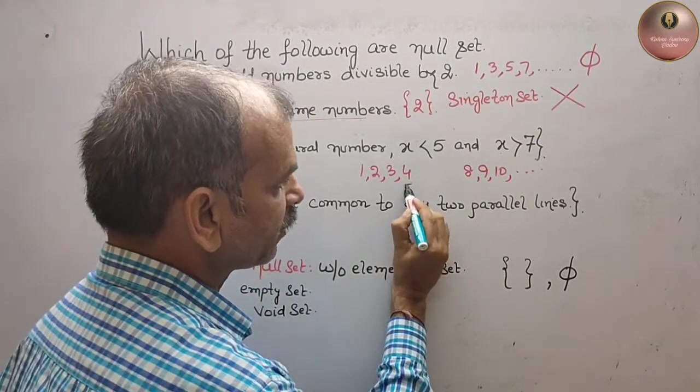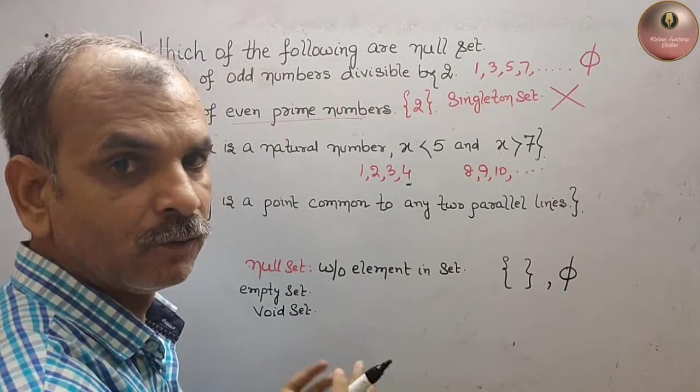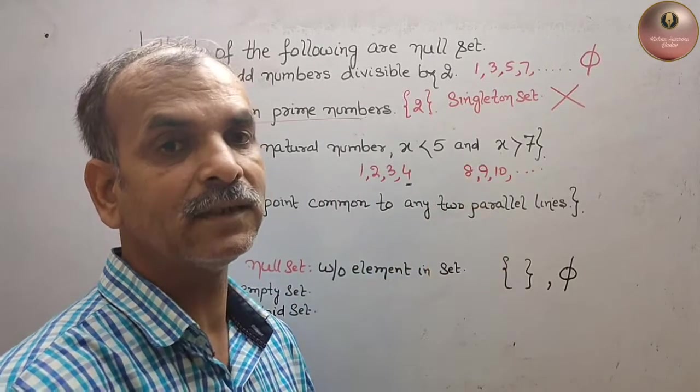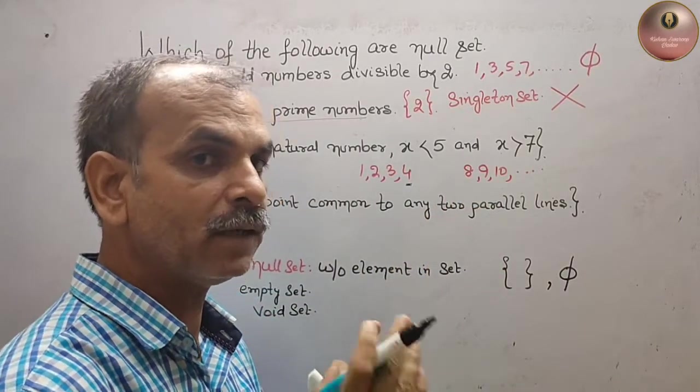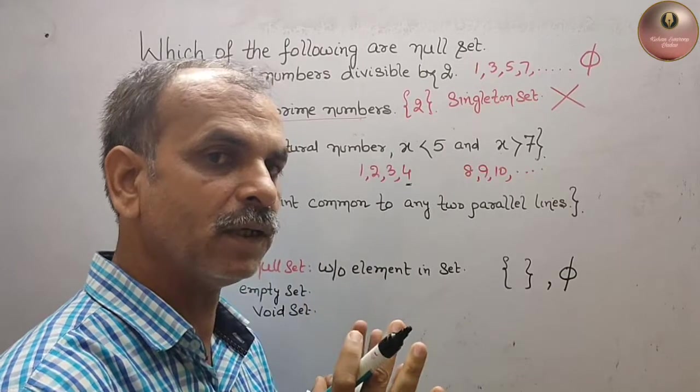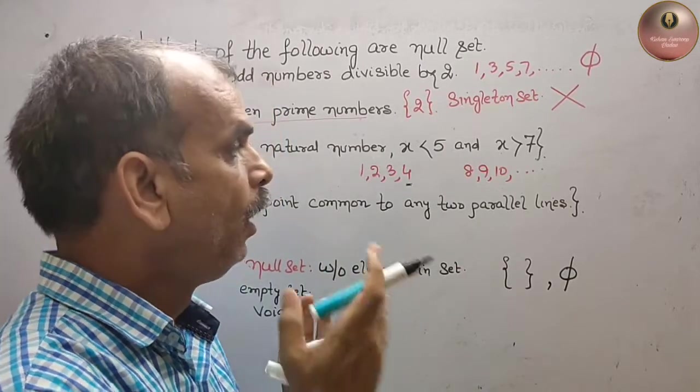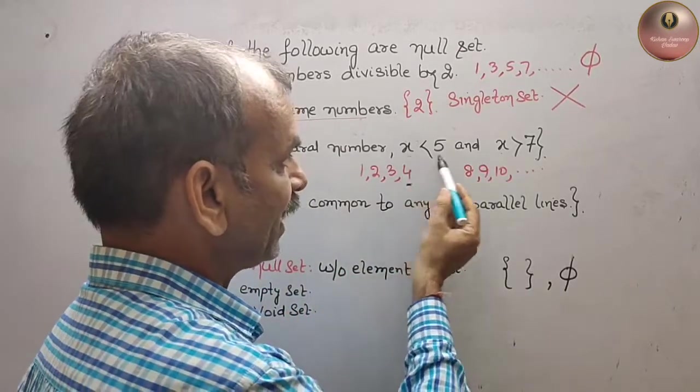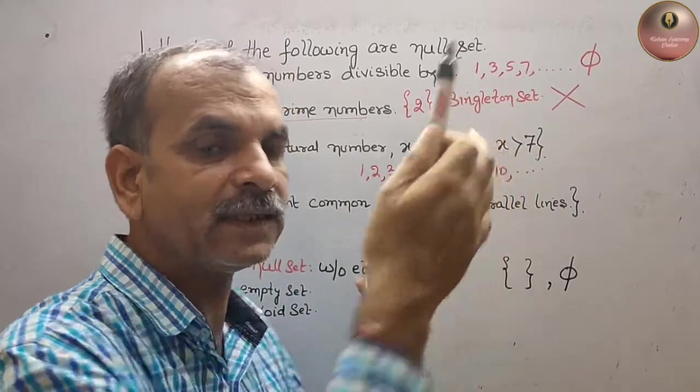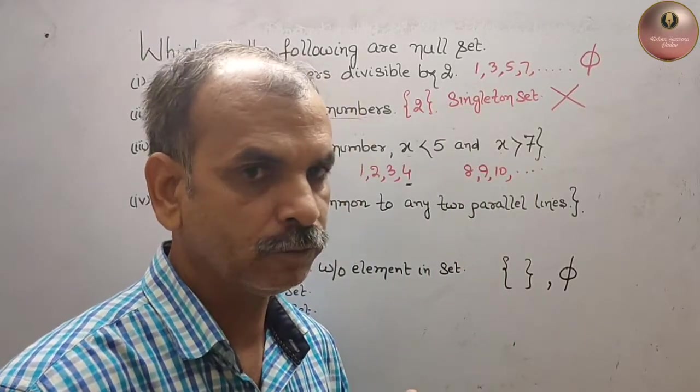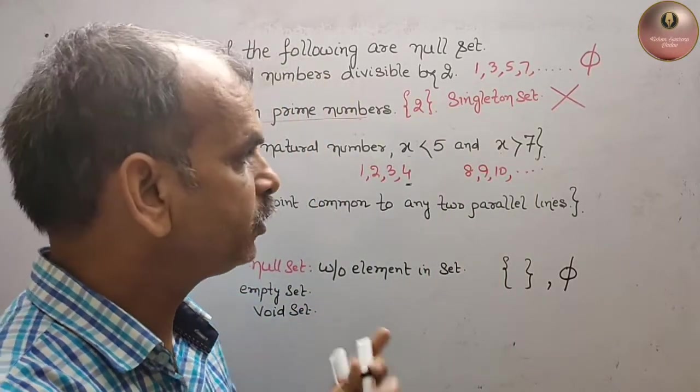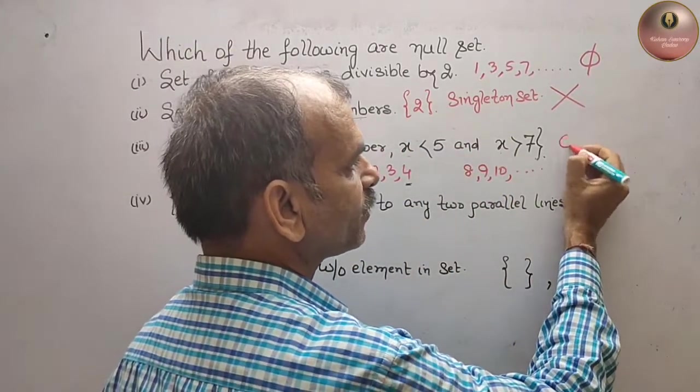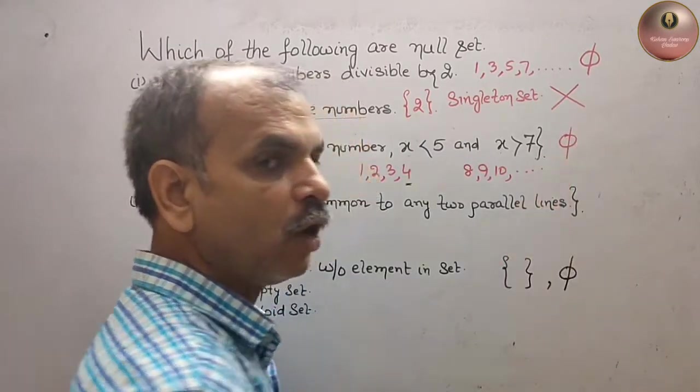That means if you choose any one of these numbers, it should be on both sides. You can see here 4 is on the left side, but 4 is not on the right side. Any number you choose should follow both rules: it should be less than 5 and also greater than 7. We don't find any such type of numbers, therefore we can say it's a null set or void set.